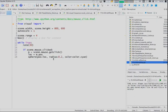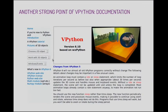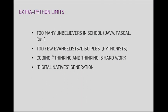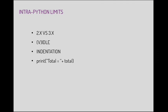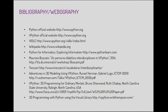Here are some results. Another strong point of vPython is its really nice and well-written documentation. There are also problems: too many unbelievers in school, too few Python evangelists and disciples. The digital-native generation can use technology, but no further. There are also intra-Python limits. I want to end with this: Python and vPython are semantic frames that allow us to make a bridge in the mind. That's all. Thank you.